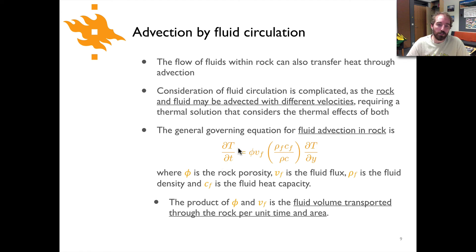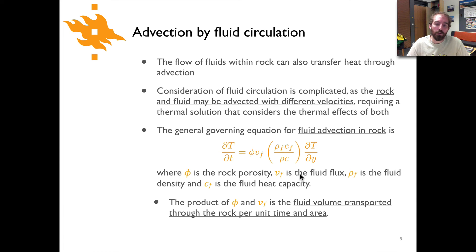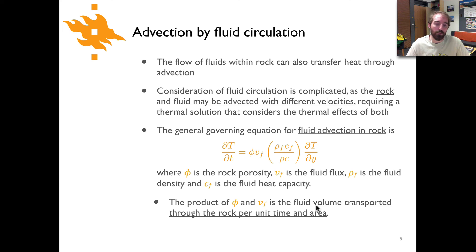The equation gives dT/dt equal to phi times vf times rho_f times c_f divided by rho_c, times dT/dy. Here phi is rock porosity, vf is fluid flux or velocity, rho_f is fluid density, and c_f is fluid heat capacity. This term represents the ratio of the fluid's material properties to those of the rock. The product phi times vf gives the fluid volume transported through the rock per unit time and area, allowing us to combine heat transfer in rock and fluid simultaneously.